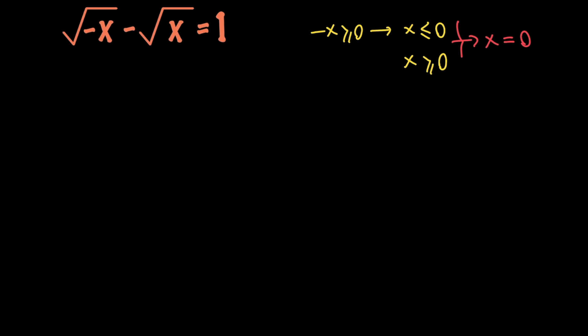But if we go ahead and plug in x equals 0 into our equation, we will find out that it won't satisfy our equation, because we will have the square root of negative 0 minus the square root of 0, which is 0 minus 0, which is 0, and it is not 1. Therefore, 0 doesn't satisfy our equation, and we can say that there is no real solution for this radical equation. Therefore, we need to focus on complex solutions, and for that we need to solve our equation.